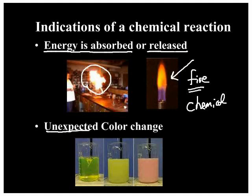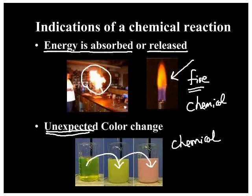An unexpected color change is another indicator. If you take a clear green liquid, stir it, and it turns cloudy green and then cloudy pink, there is no physical explanation for that — so that is a sign of a chemical change. Unexpected color changes, not something like food coloring in water, which is an expected color change.